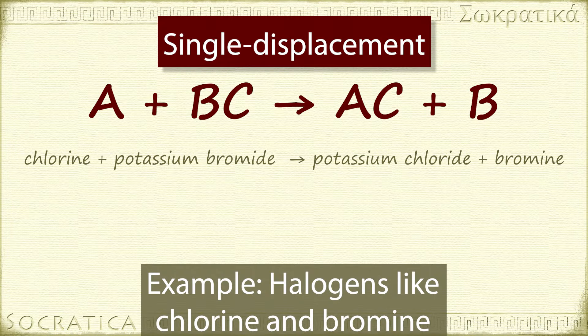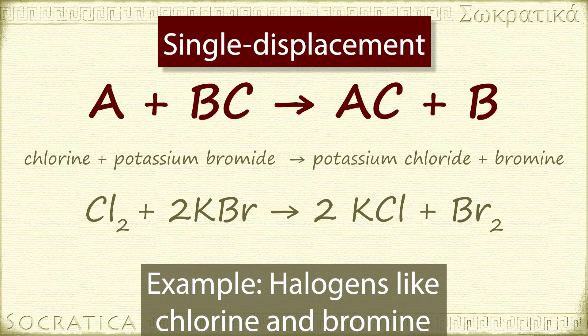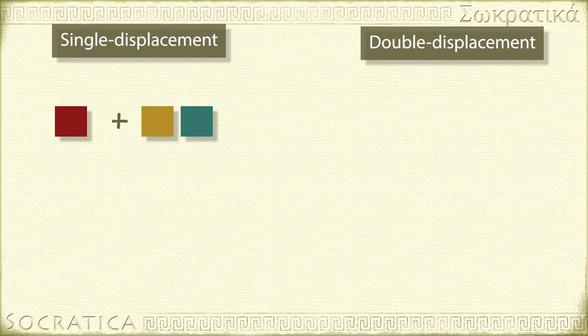So, for instance, chlorine will replace bromine in this reaction. Cl2 plus 2KBr yields 2KCl plus Br2.